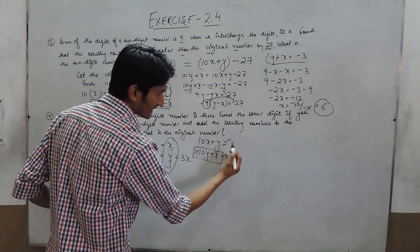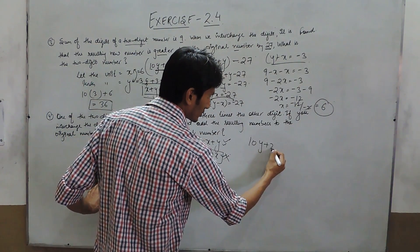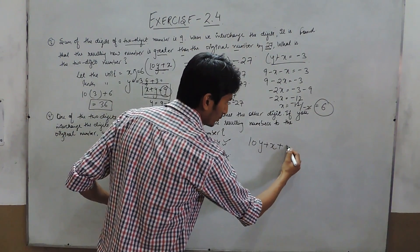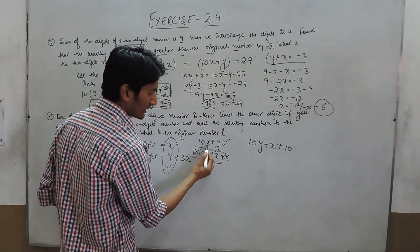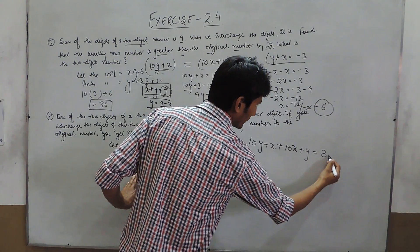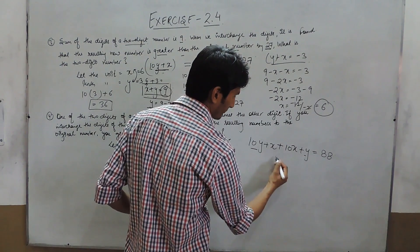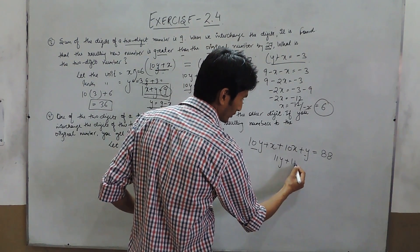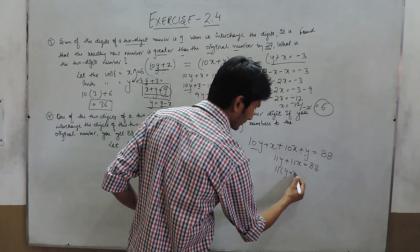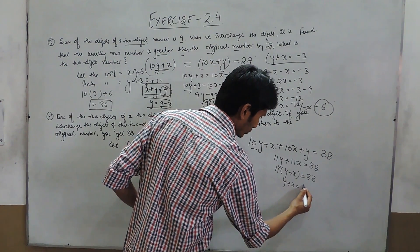When the digits are interchanged and added to the original number, we get 88. Solving this: 10x plus y plus 10y plus x equals 88, which gives 11x plus 11y equals 88. Taking 11 as common, x plus y equals 8.